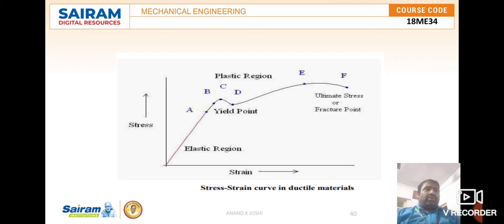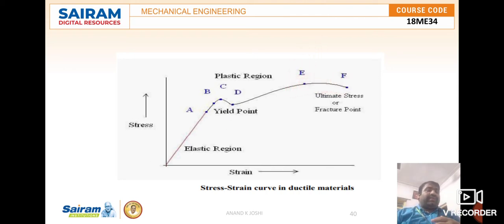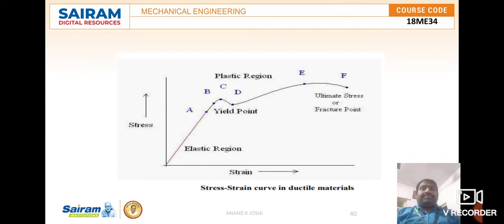Point B is called the elastic limit. Crossing the elastic limit, between points B and C is the plastic region, where the upper yield point starts, and D is the lower yield point. Once it crosses the lower yield point with further load, the ultimate stress is found. The maximum stress is found at point E. After taking the maximum load, fracture begins — point F is the fracture point, and then the material breaks. This is how the ductile material curve appears on the stress-strain curve.